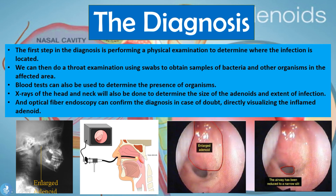The endoscopy procedure involves inserting a scope into the nasal cavity to view the nasopharyngeal area. The adenoids appear enlarged and the airway is seen to be significantly reduced. This nasal obstruction is what contributes to the great difficulty in breathing experienced by these patients.